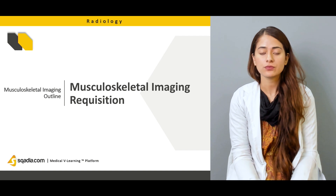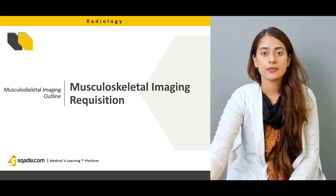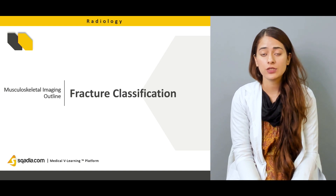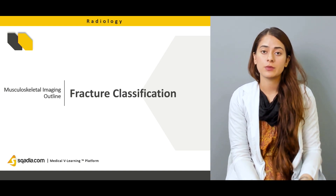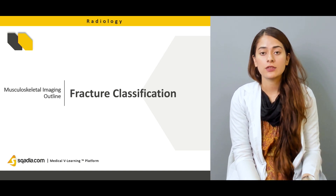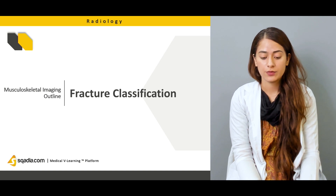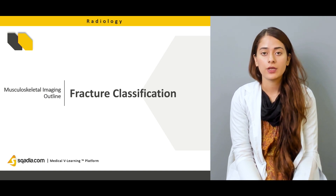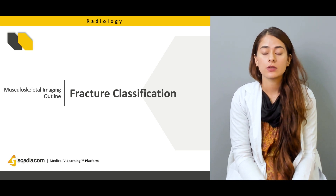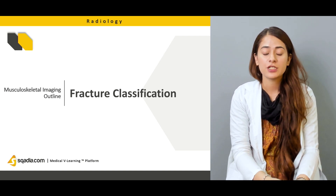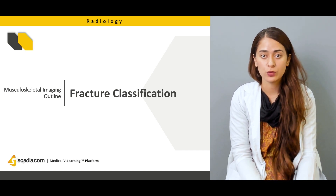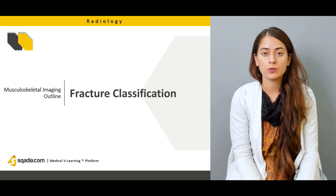In the second part, we will talk about fracture classification. Fractures can be classified on the basis of the region or area in the bone where the fracture has resulted due to some injury or trauma. The area on the bone can be a determinant of the type of fracture — for example, if the fracture is of the shaft of the bone, or the diaphysis, it is called a diaphyseal fracture.